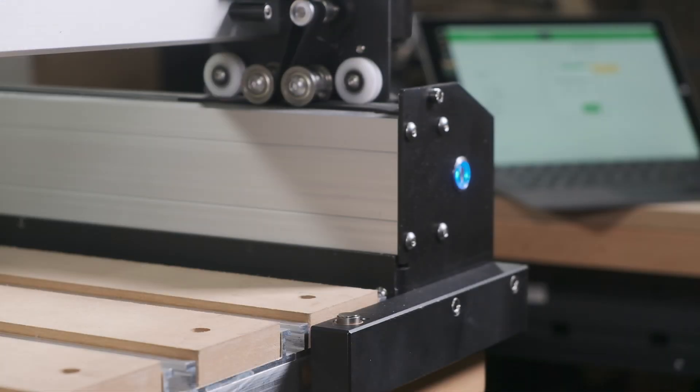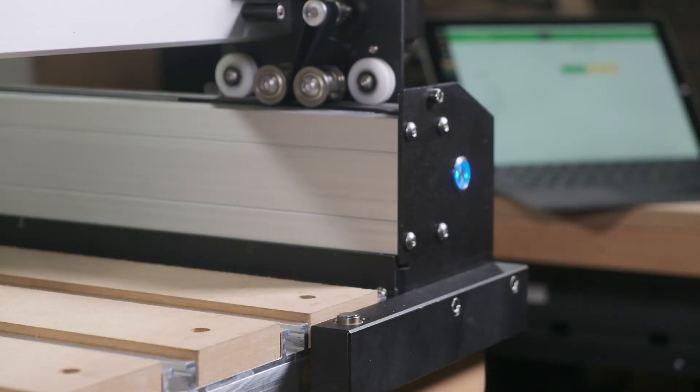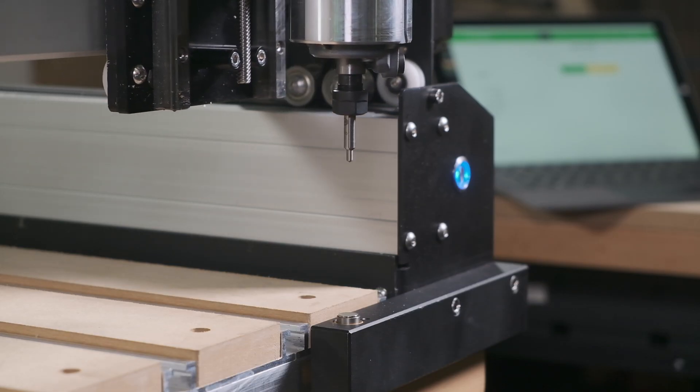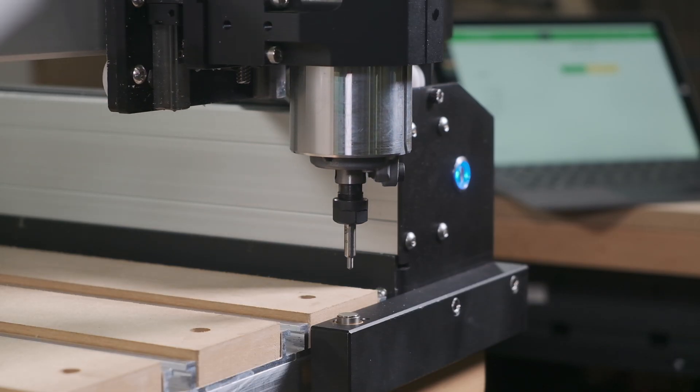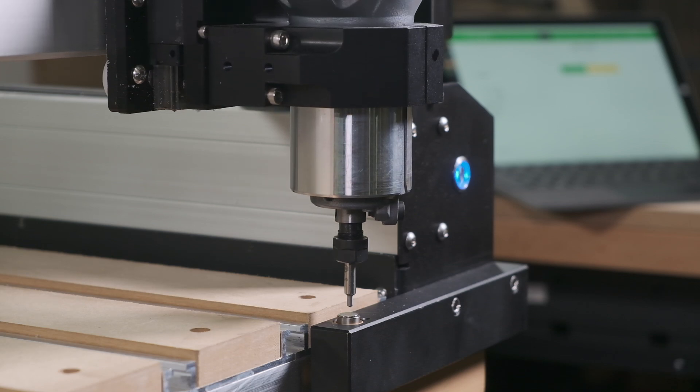Note number two, something you should definitely keep an eye on is the spring force of the drag engraver relative to a tool-length probe like the Bit Setter. We recommend disabling the Bit Setter if you're using a drag engraver on the Shapeoko.